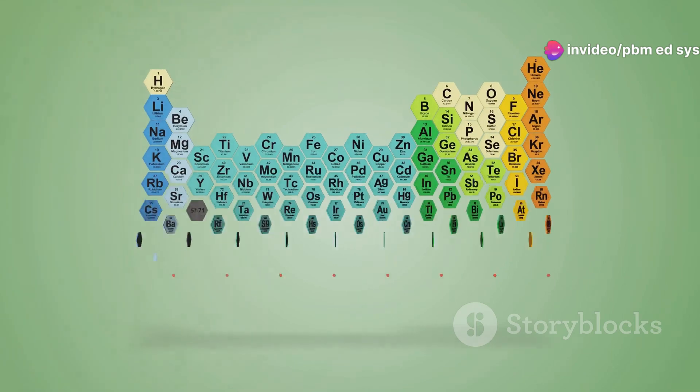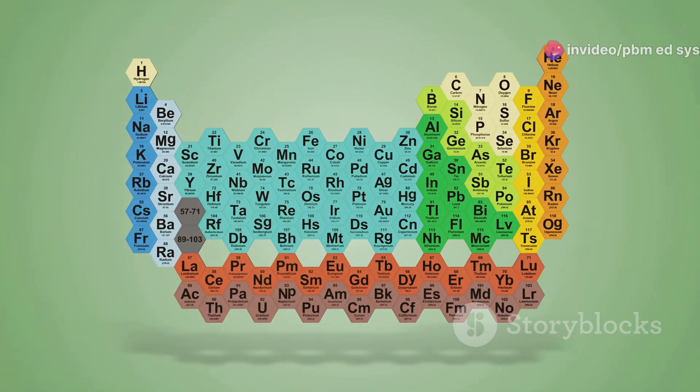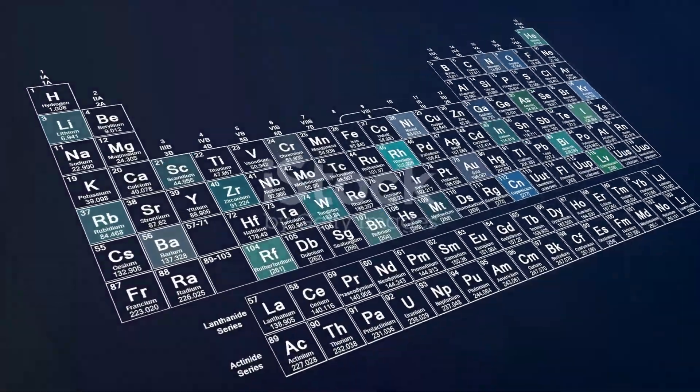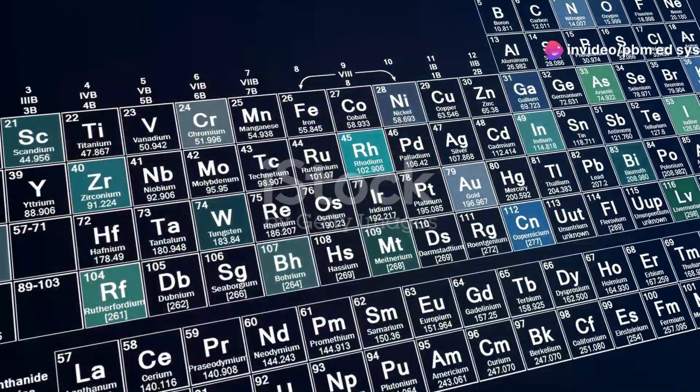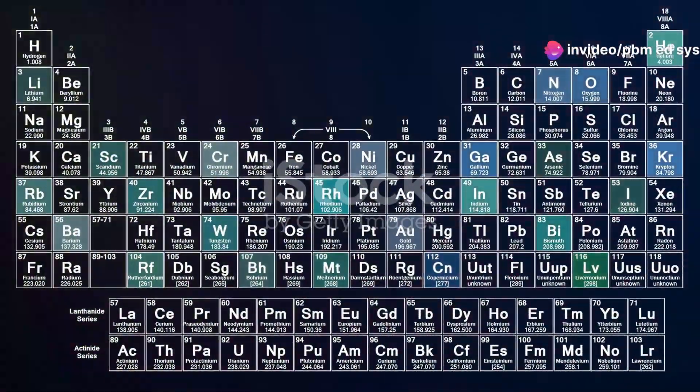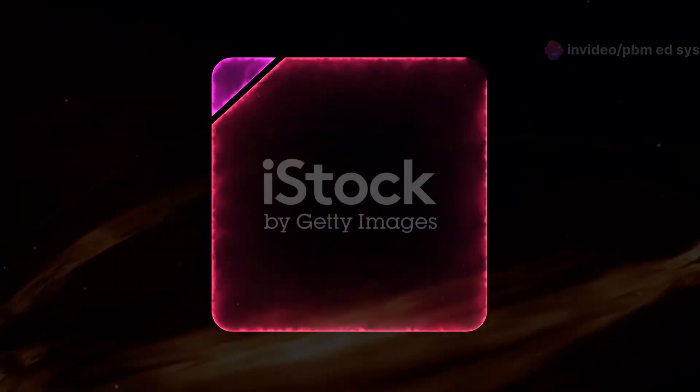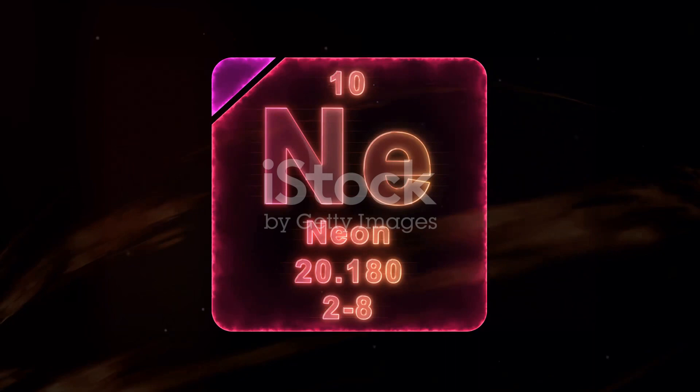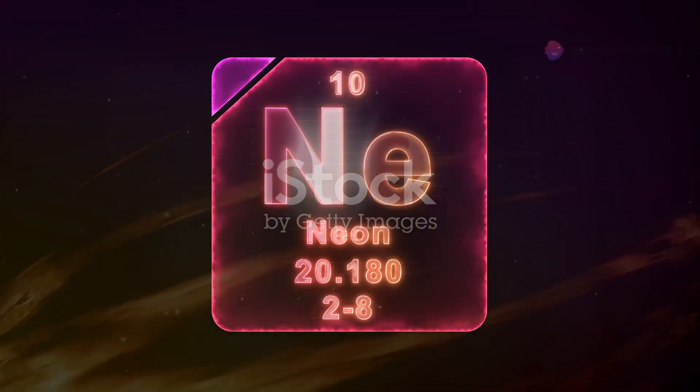Elements in the periodic table are not just thrown together. They are arranged by their atomic number, which means the number of protons in an atom's nucleus. This arrangement isn't merely for aesthetics. It reveals profound similarities among elements and groups them into families with shared chemical behaviors. For instance, the noble gases, which include helium and neon, are famed for their lack of reactivity, comfortably sitting together on the far right of the table.